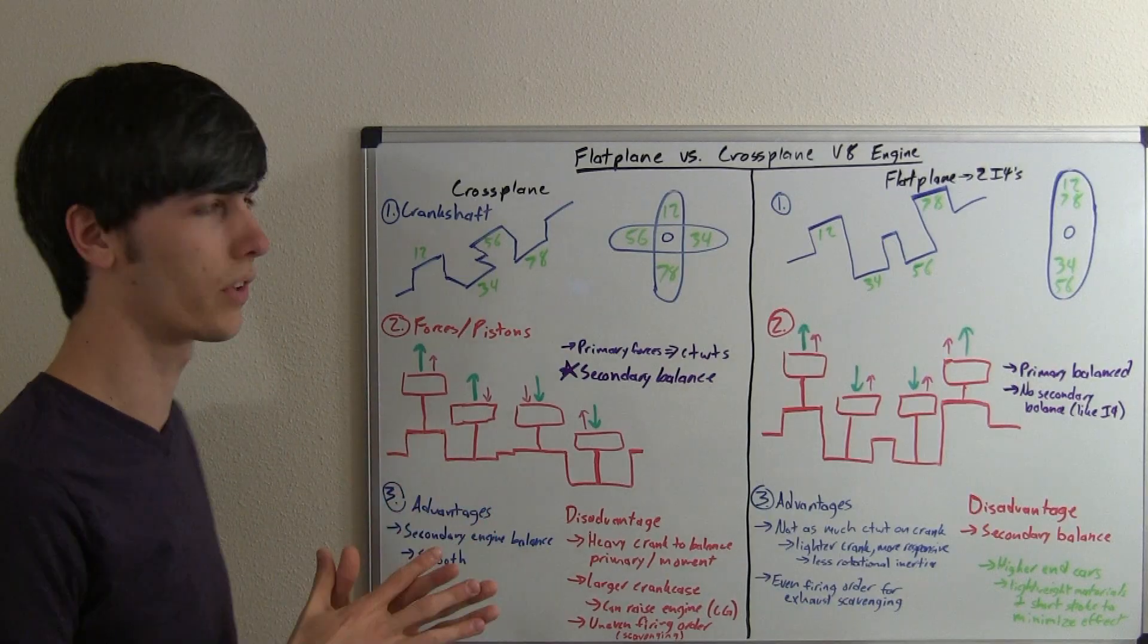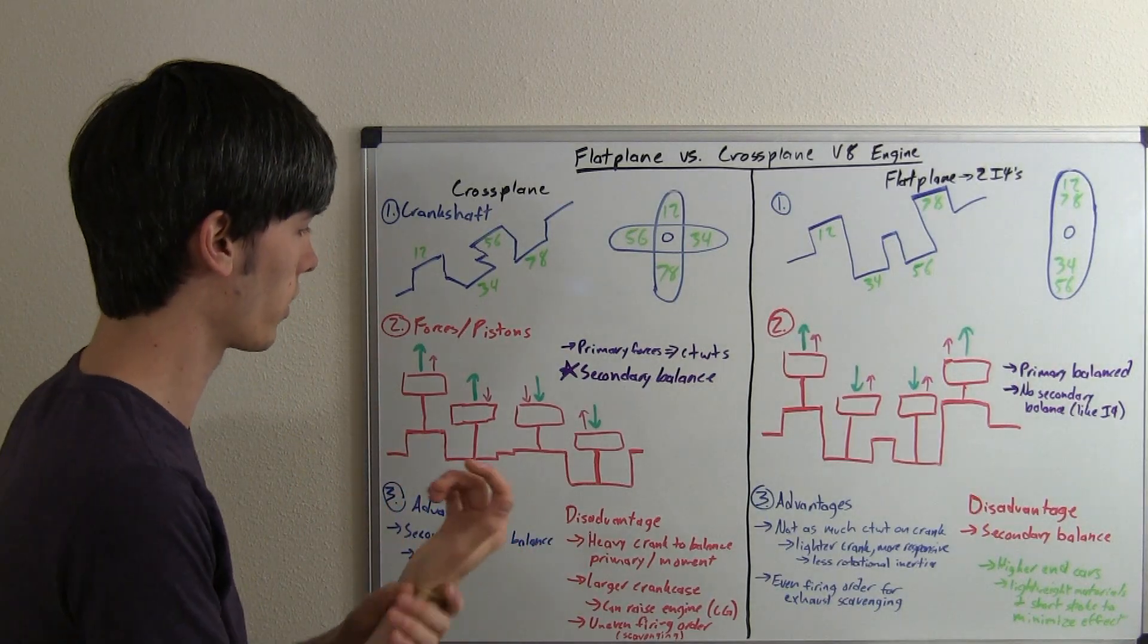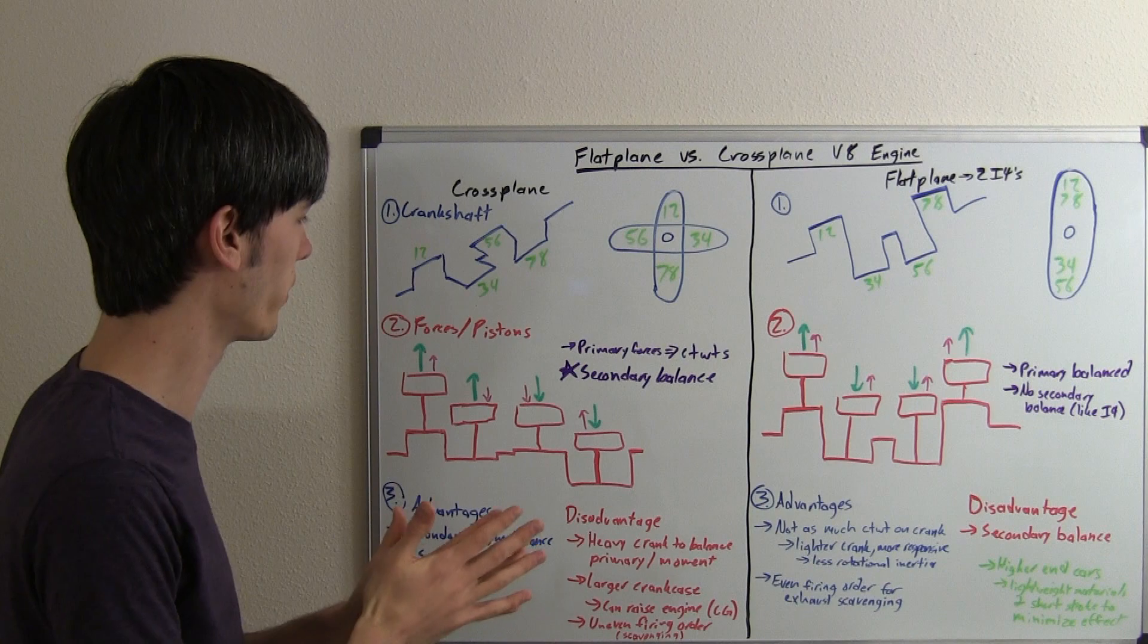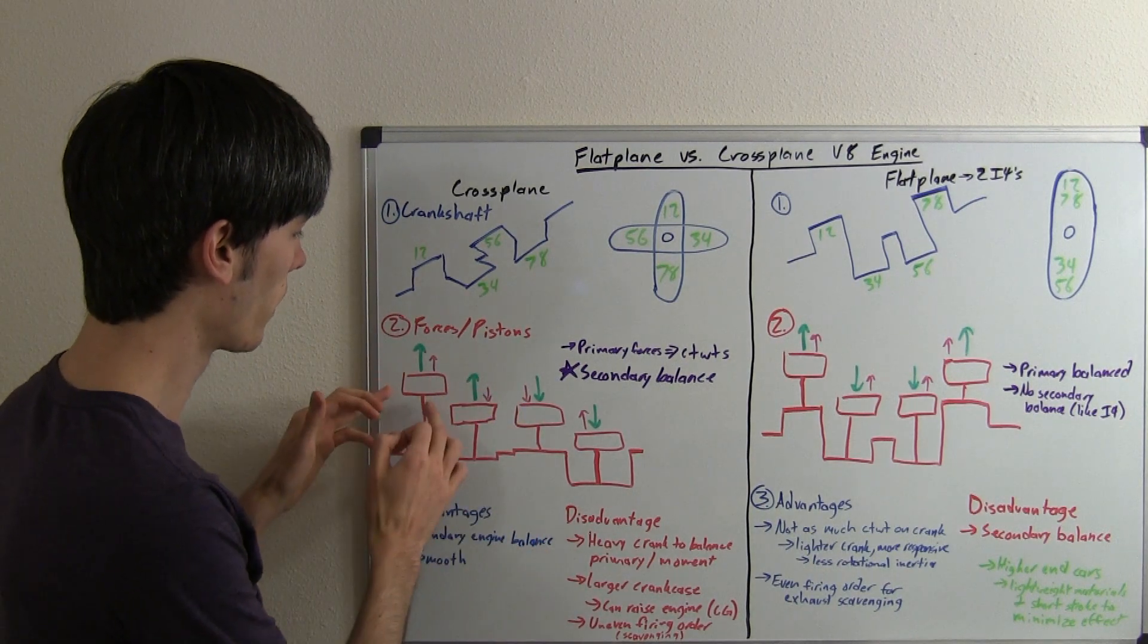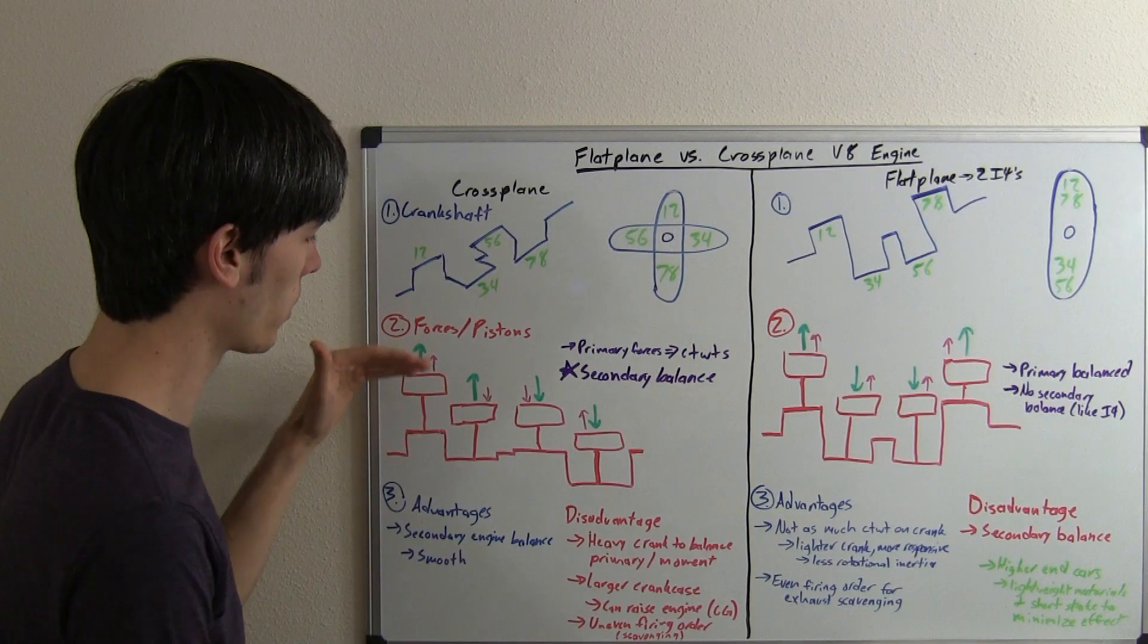So let's kind of analyze the forces that are going on with each of these, and that'll help us determine why both of these exist. So looking at a cross-plane, what we're going to have here is the cylinder in the front is going to be up near top dead center,